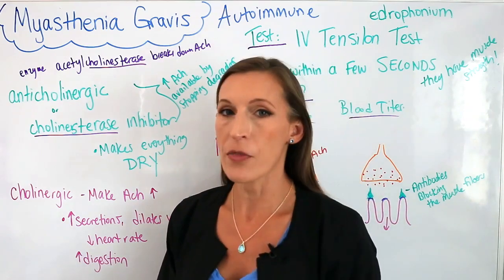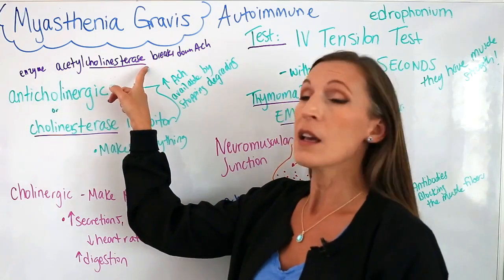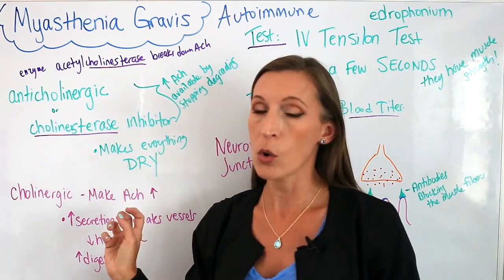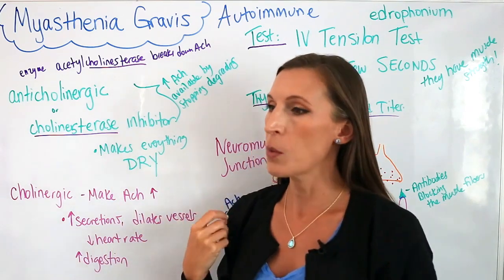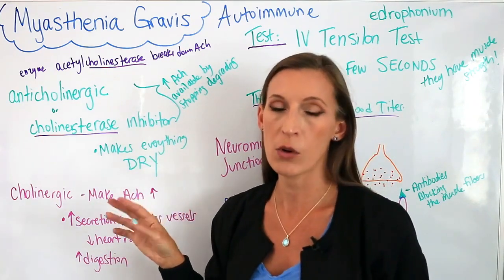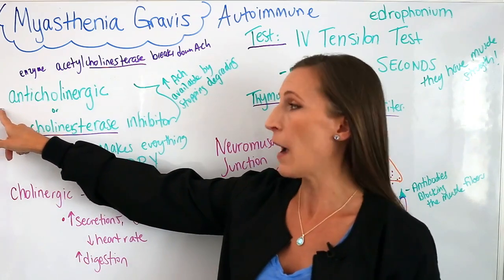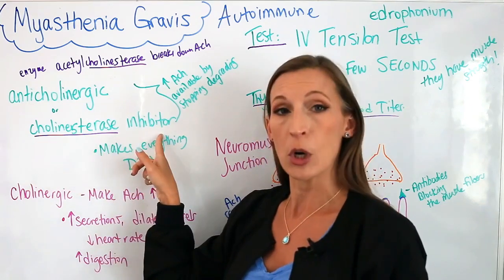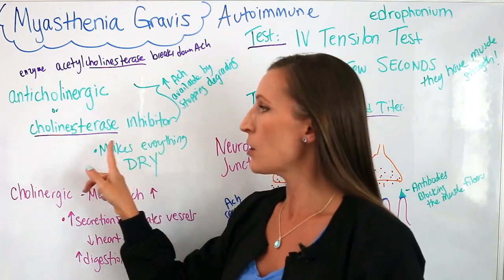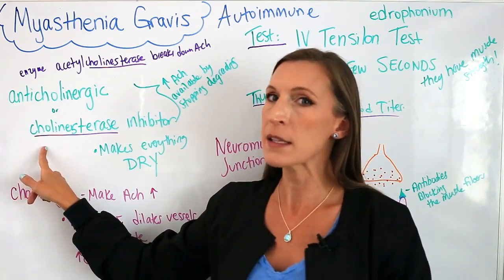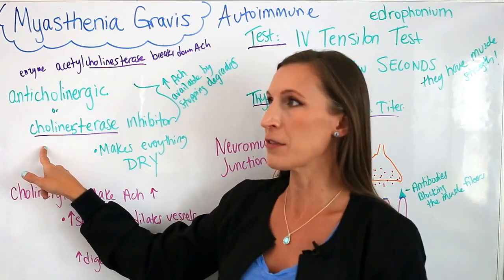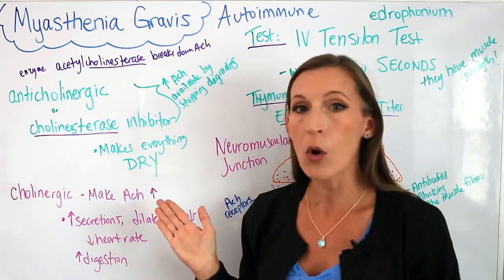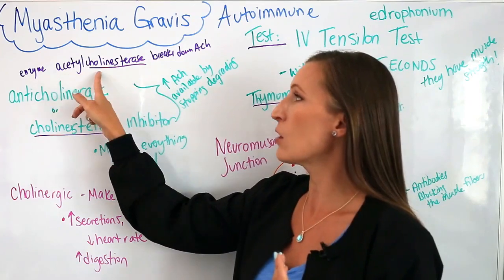There's an enzyme called acetylcholinesterase that breaks down acetylcholine — and we know acetylcholine makes muscles contract. We want to get rid of that enzyme so the patient has more acetylcholine available. The drug class is called anticholinergic, also written as cholinesterase inhibitor. Inhibit means to prevent, so they're just written two different ways but mean the same thing. This drug category increases the amount of acetylcholine available by stopping the degrading action of the acetylcholinesterase enzyme.